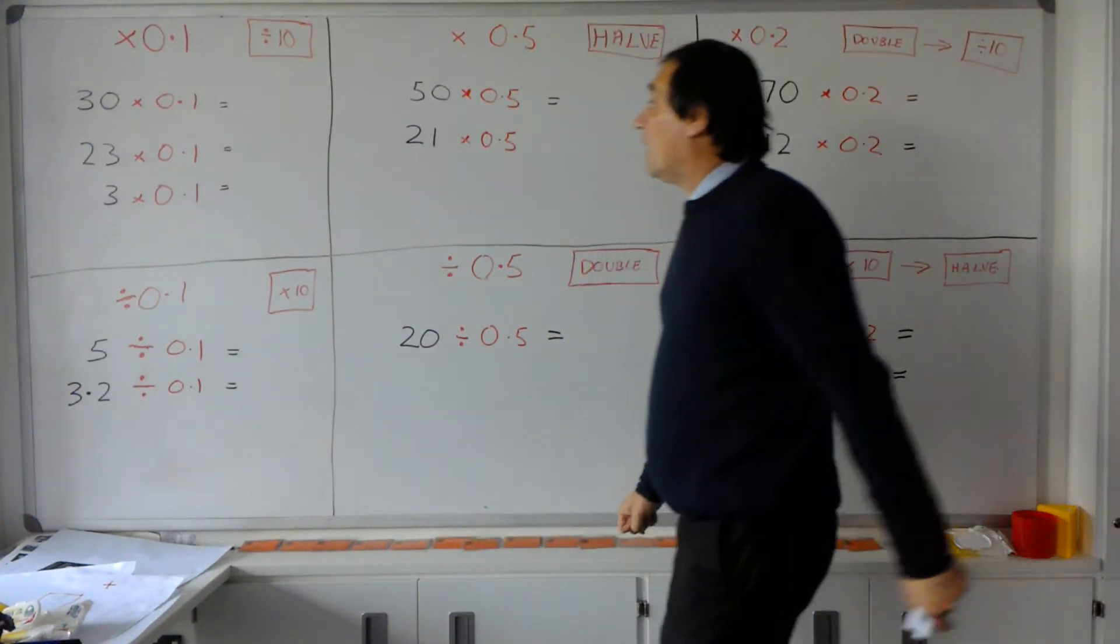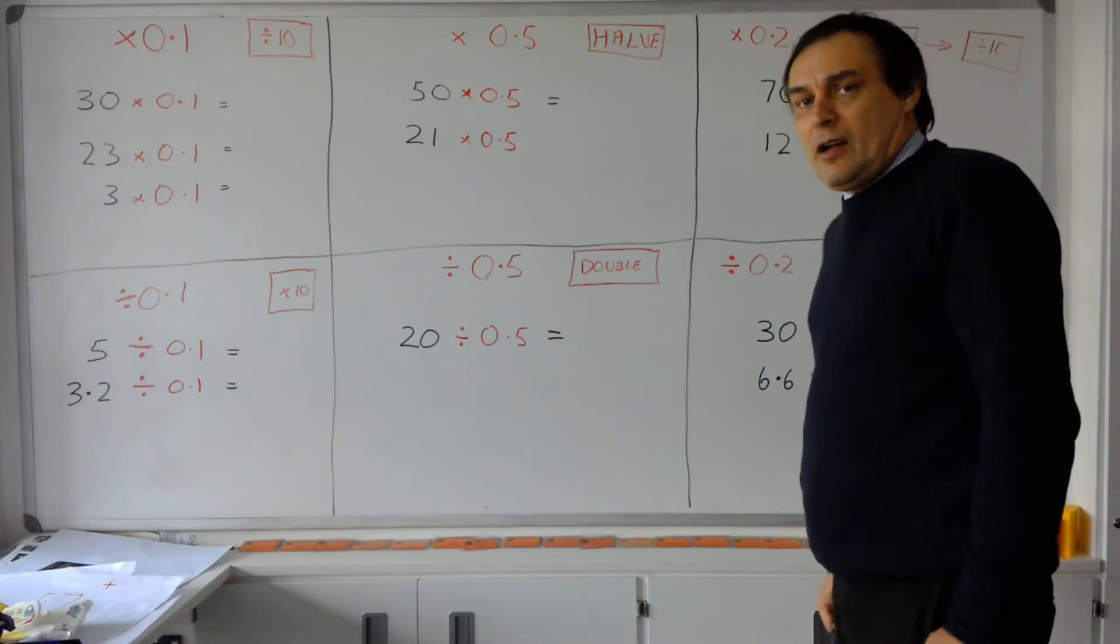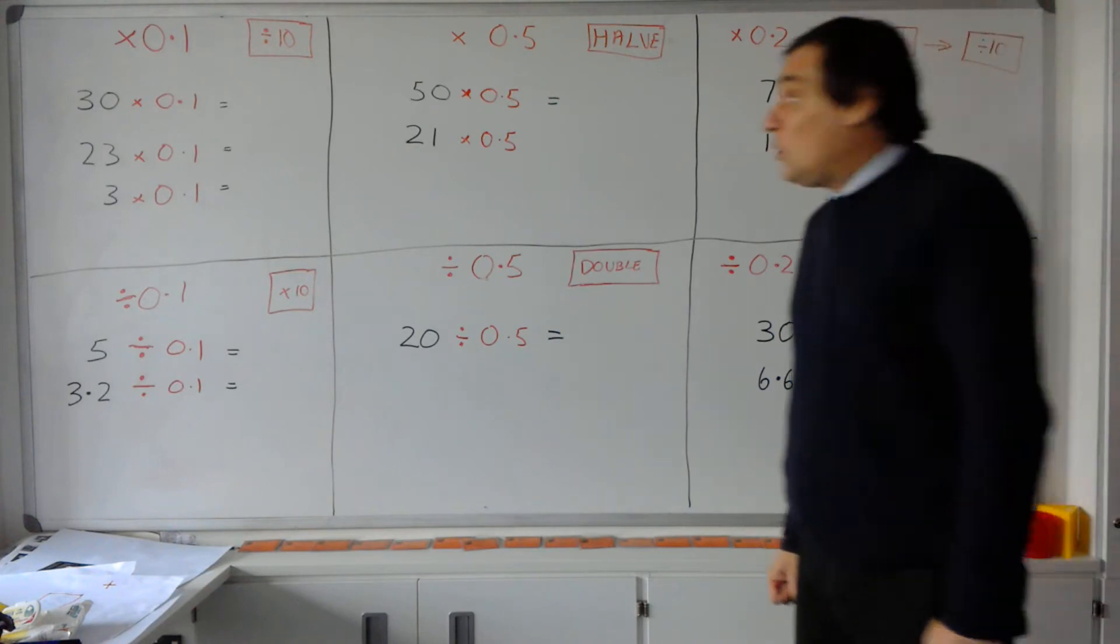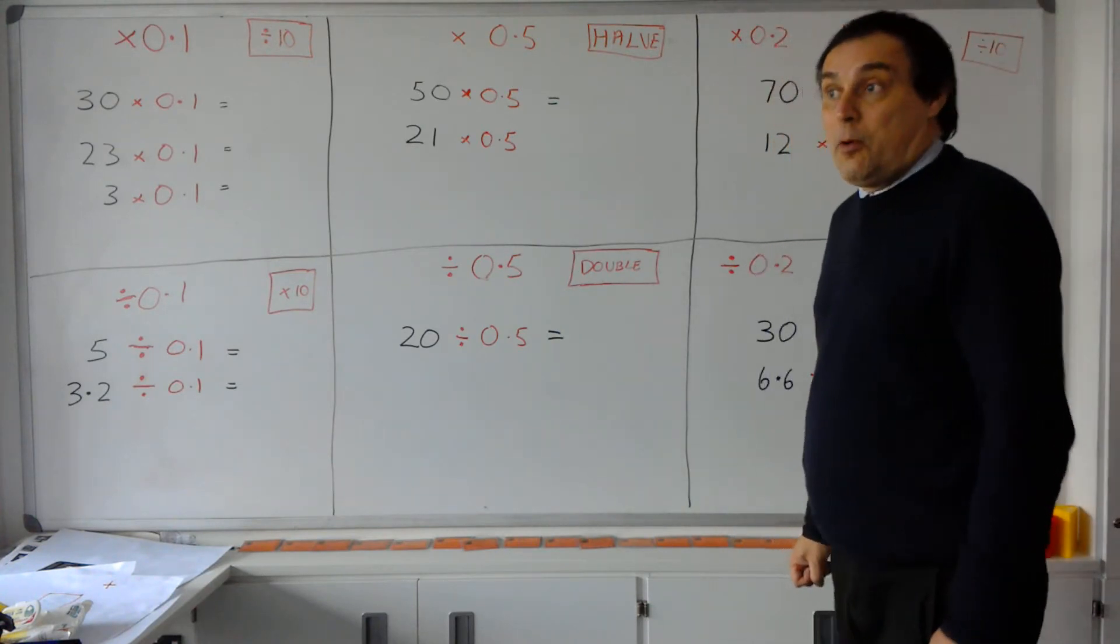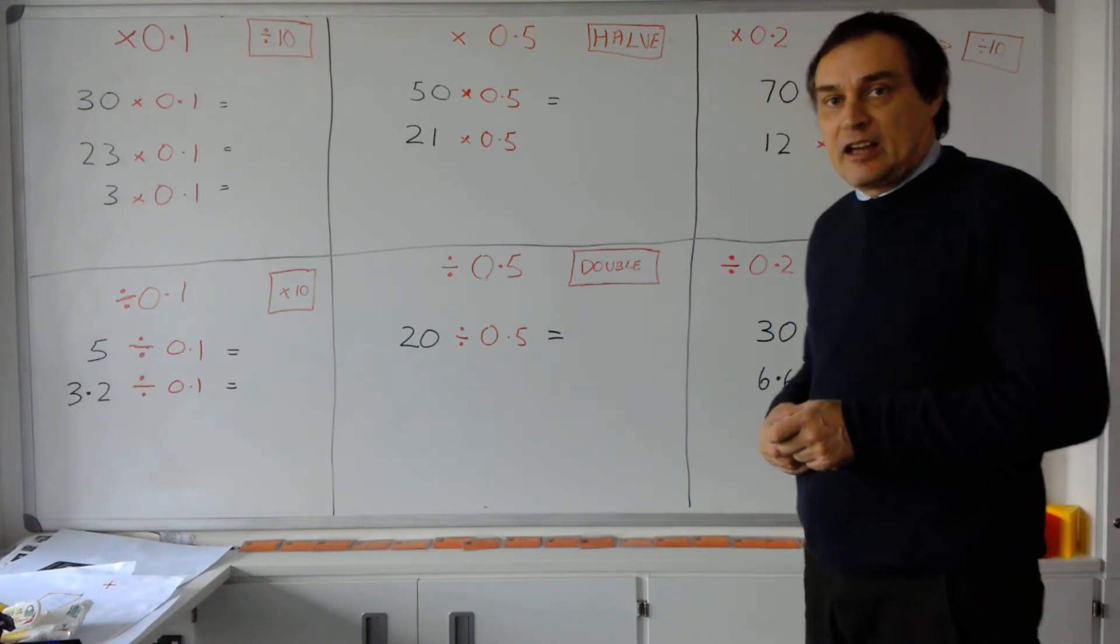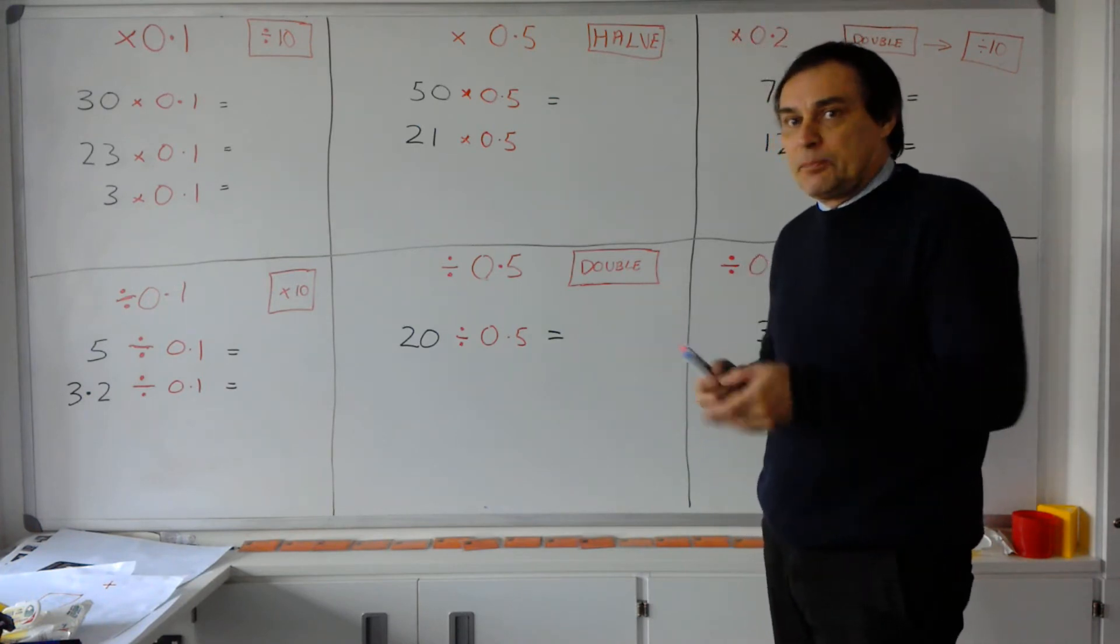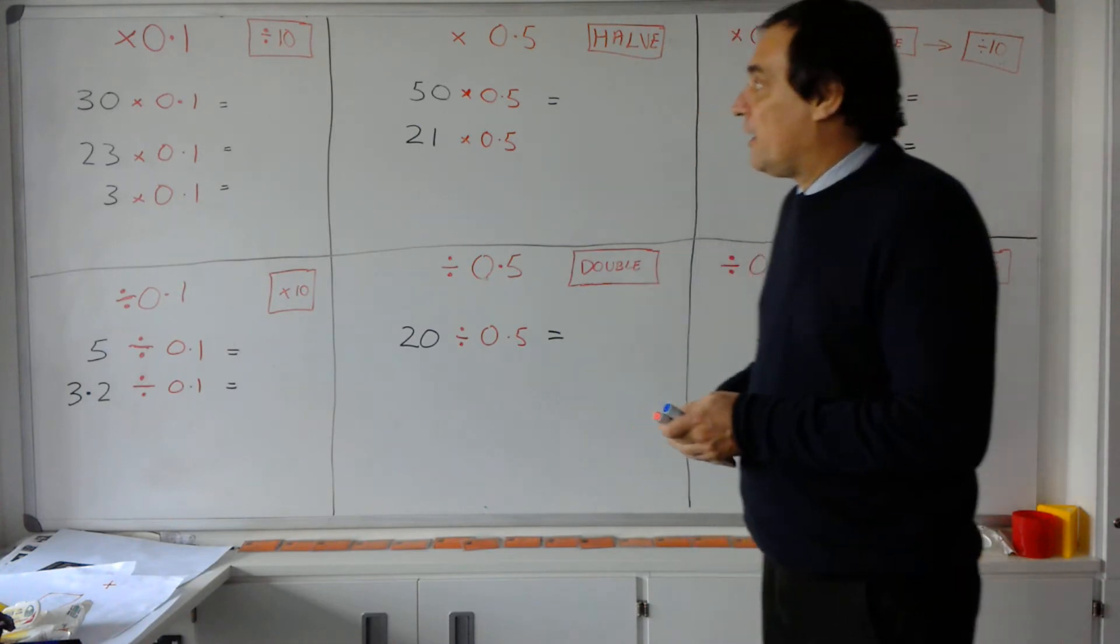Okay, I think we're rolling. Today we're going to be looking at multiplying and dividing numbers by 0.1, 0.5, and 0.2. Now these are common decimals that people often get confused with, but I'm going to show you some shortcuts or explain what they actually mean so it might be more logical by the end of this.